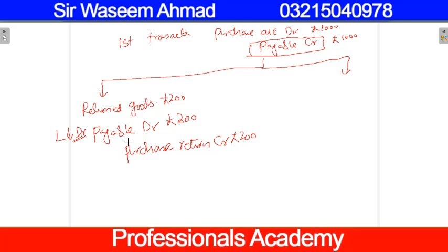So purchase return is a decrease in expense. One more thing to remember: when we discuss the accounting equation, purchases affect the asset inventory account. But in the case of journal entries we consider purchase as an expense. There are two types of inventory systems — perpetual inventory system and periodic inventory system — and that is a particular issue which we will discuss later in the chapter on inventory.